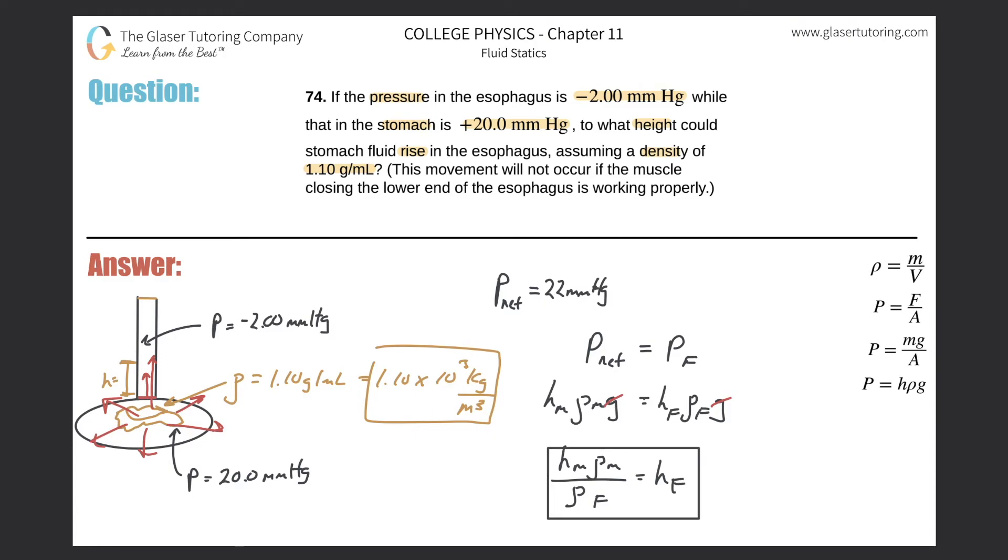All we're going to do is now plug in the value simply. So this becomes, remember the height of mercury, you might be saying, well, where's the mercury in the problem? The mercury is given to us in the pressure. So what's the height of mercury here? It's 22 millimeters. What's that in terms of meters? It's 0.022 meters.